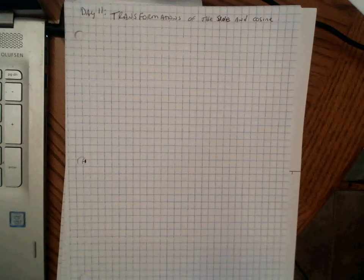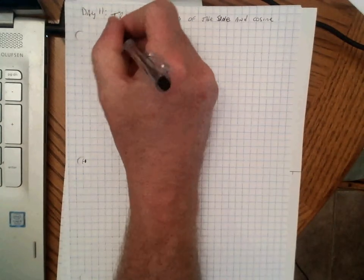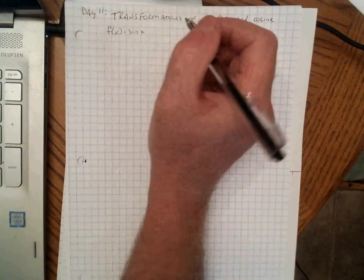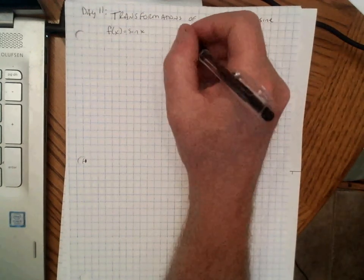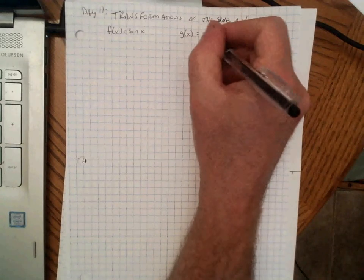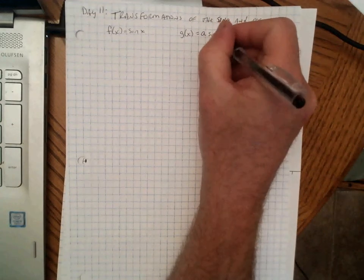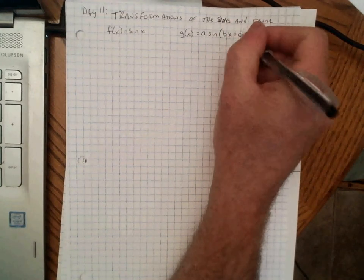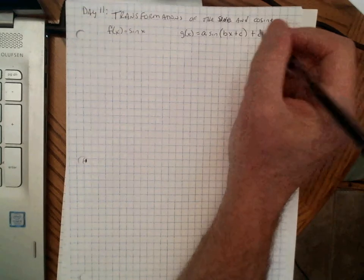When we say this, we mean if we have a function f of x equals sine x, a transformation of that will have the form g of x equals some number a times sine, some number b times x, plus some number c, plus d. It could have any or all of a, b, c, or d.